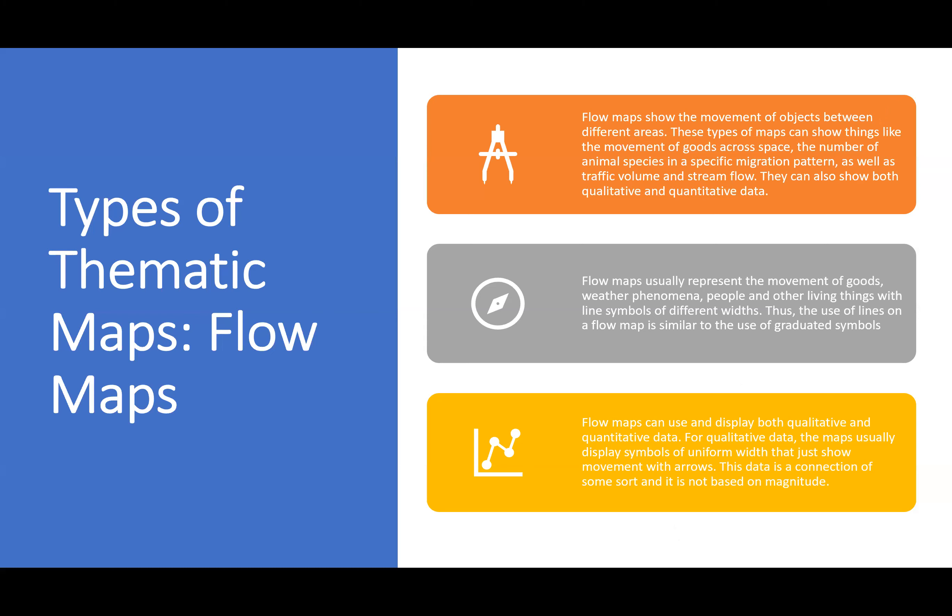Flow maps show the movement of objects between different areas. They can show things like the movement of goods, animal migration patterns, traffic volume, and stream flow. They can display both qualitative and quantitative data. Flow maps usually represent movement with line symbols of different widths — similar to graduated symbols. For qualitative data, maps display symbols of uniform width showing movement with arrows. It's a connection of some sort — not based on magnitude but more about where something is going.